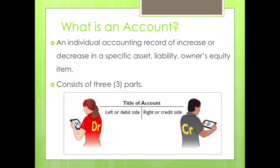In Chapter 1 you learned there are several accounts within the parts of the accounting equation — for example, assets includes cash, supplies, and equipment. An account is an individual accounting record of increases or decreases in a specific asset, liability, or owner's equity. An account consists of three parts: the title, a left or debit side, and the right or credit side. We refer to this illustration as the T-account, simply because the format resembles a T.